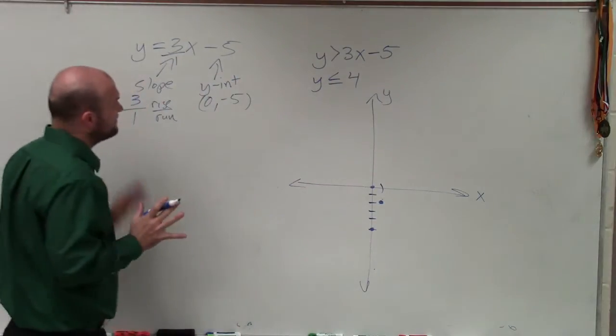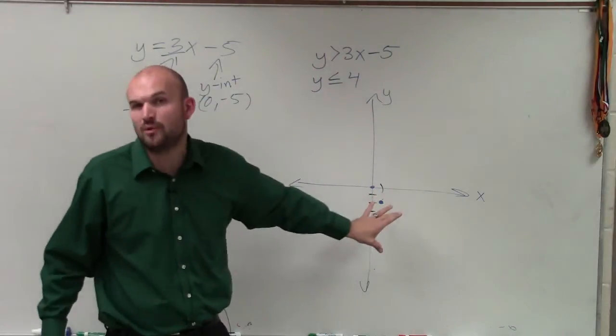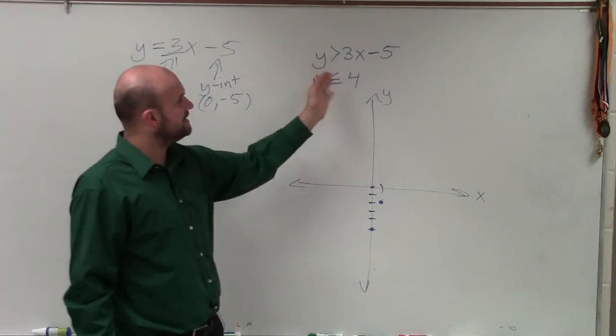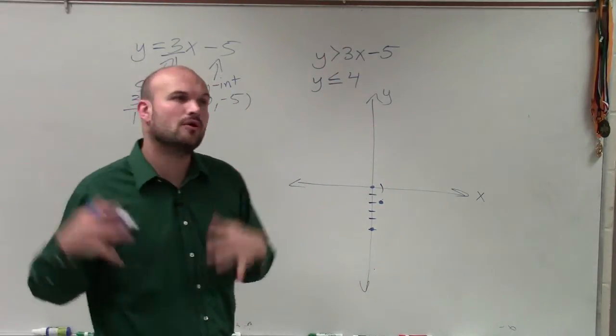Now, when graphing this, I want to actually go back. So I used the equation to kind of give me my two points. But when graphing this, what I want to be doing is looking at, all right, is this going to be a solid or a dashed line? Is this boundary line going to be a part of my solution or not a part of my solution?